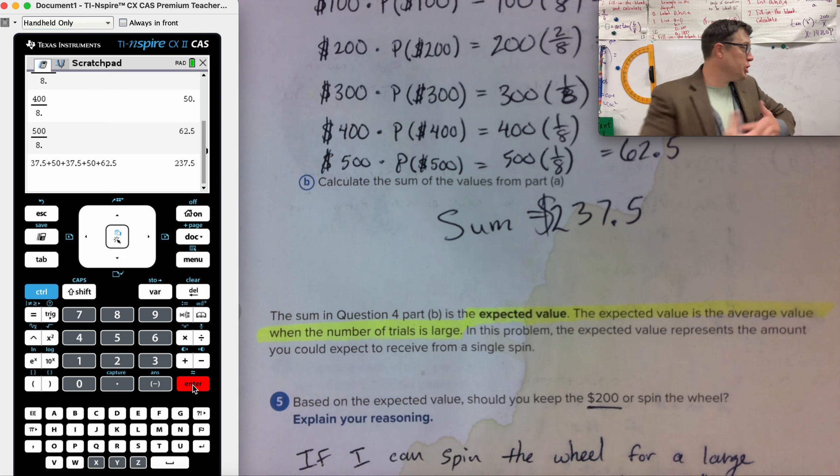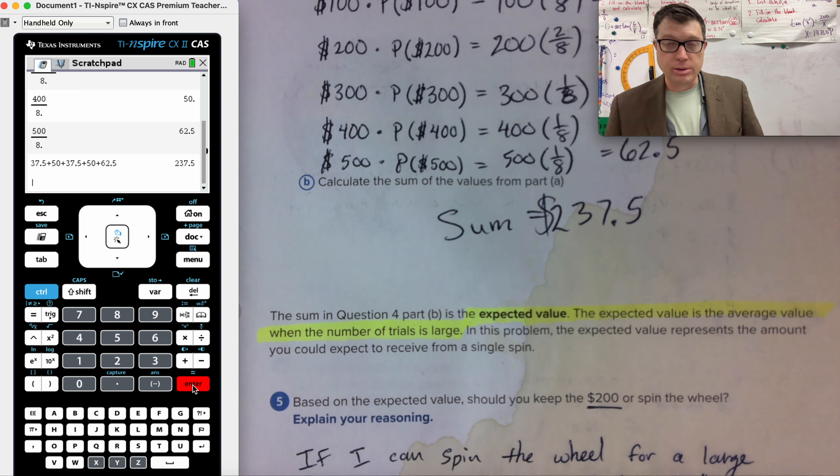On average, the collection of all of us, a large number of us, will on average make $237.5 per person, per throw, per spin of the wheel. But it's an average. And because it's an average, we need to keep that in mind when we talk about expected value and how it relates directly to just you.